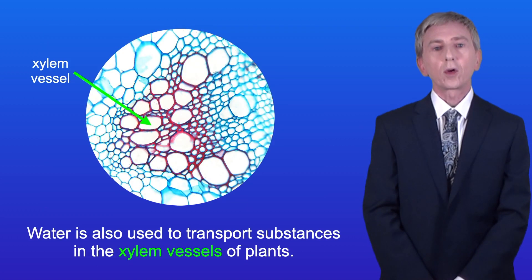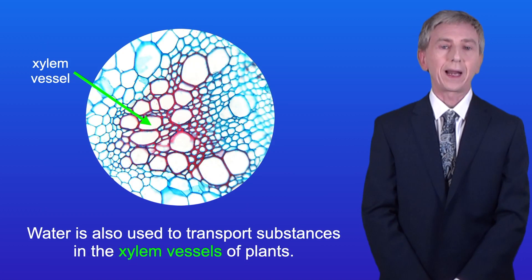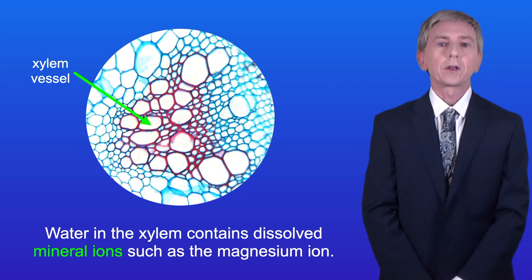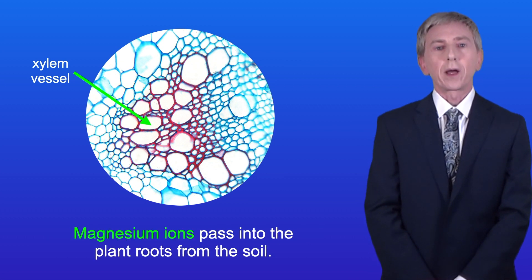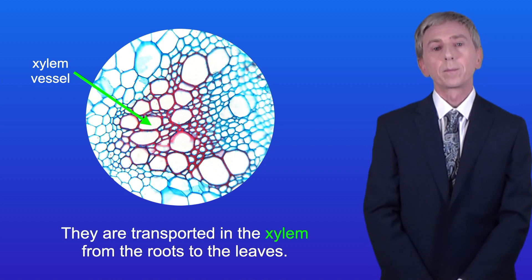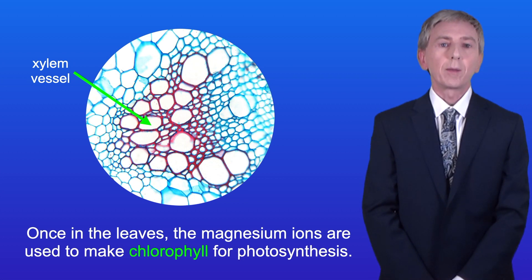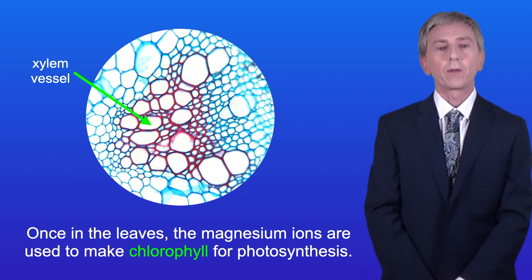Water is also used to transport substances in the xylem vessels of plants. Water in the xylem contains dissolved mineral ions such as the magnesium ion. Magnesium ions pass into the plant roots from the soil. They're transported in the xylem from the roots to the leaves. Once in the leaves the magnesium ions are used to make chlorophyll for photosynthesis.